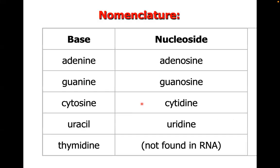A nucleoside is a sugar plus a base. So adenine plus sugar is adenosine; guanine gives guanosine; cytosine gives cytidine; uracil gives uridine. When you add a phosphate to a nucleoside — base plus sugar plus phosphate — we call that a nucleotide.